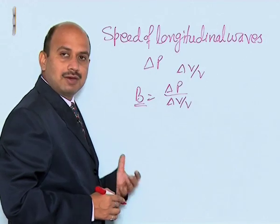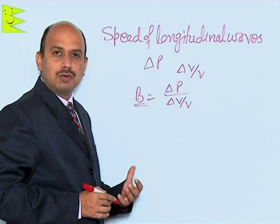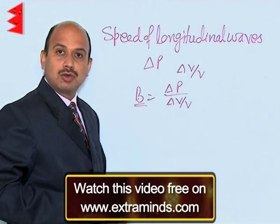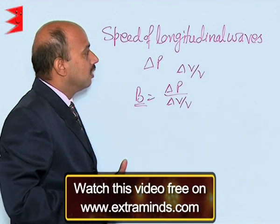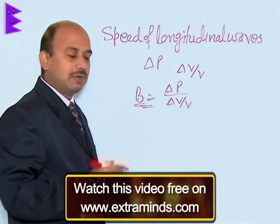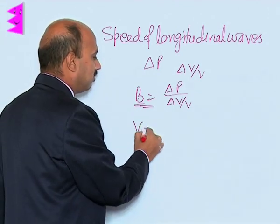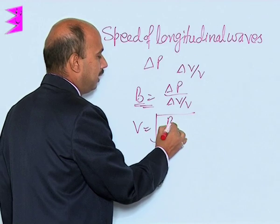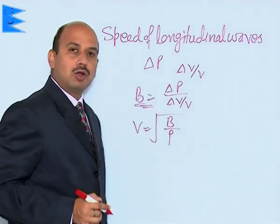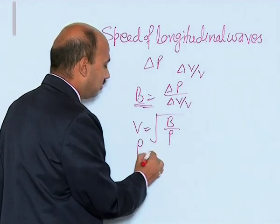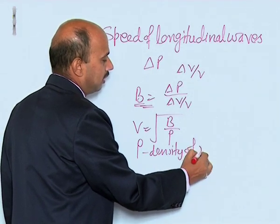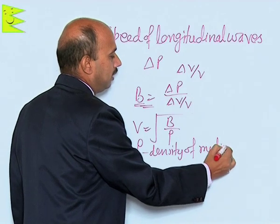Whenever a longitudinal wave travels, the change in pressure and volume of the medium takes place — that is why sound waves are also called pressure waves. The speed of the longitudinal wave in a medium is given by v = √(B/ρ), where B is the bulk modulus and ρ is the density of the medium.